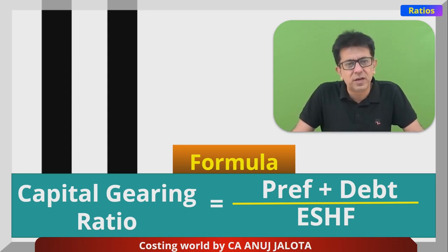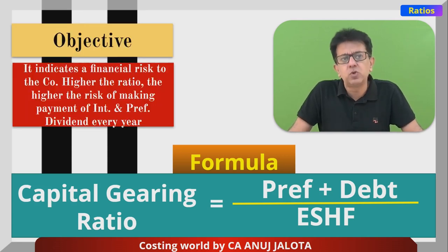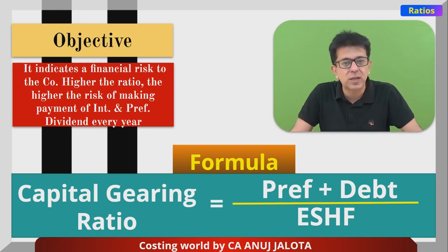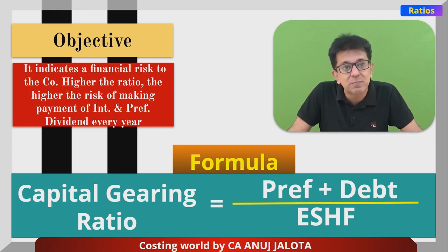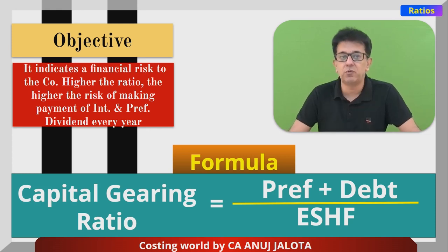So the capital gearing ratio formula is: preference plus debt — capital for which there is fixed interest or fixed preference dividend — divided by equity shareholders' funds in the denominator. Equity shareholders' funds equals equity share capital plus reserves and surplus less any expenses not written off to date. This ratio indicates the financial risk to the company.